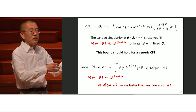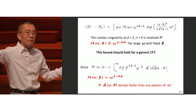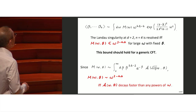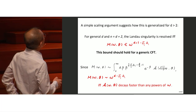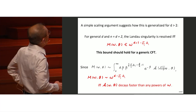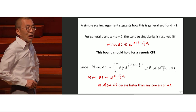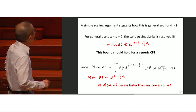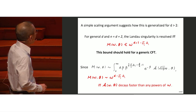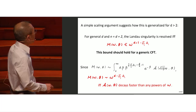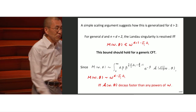This can be generalized to any dimension by a simple scaling argument. For general D and N — the D plus two point correlation function — the Landau singularity is resolved if and only if the Mellin amplitude decays faster than a certain power, so that a similar integral is convergent. In Penedones' relation, if the flat space amplitude decays faster than any power of omega, the Mellin amplitude should satisfy this bound.